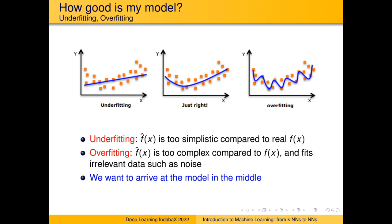An overfitted model goes through every single data point, giving zero error on the training set. You might think that's better, but it fails to capture overall trends. If you ask it to predict points outside this range, it will predict something utterly useless. When you overfit, you overlearn the particular dataset — you become super good at it and bad at anything not represented by it. You fail to generalize entirely, making your model useless. What we want is something right in the middle.